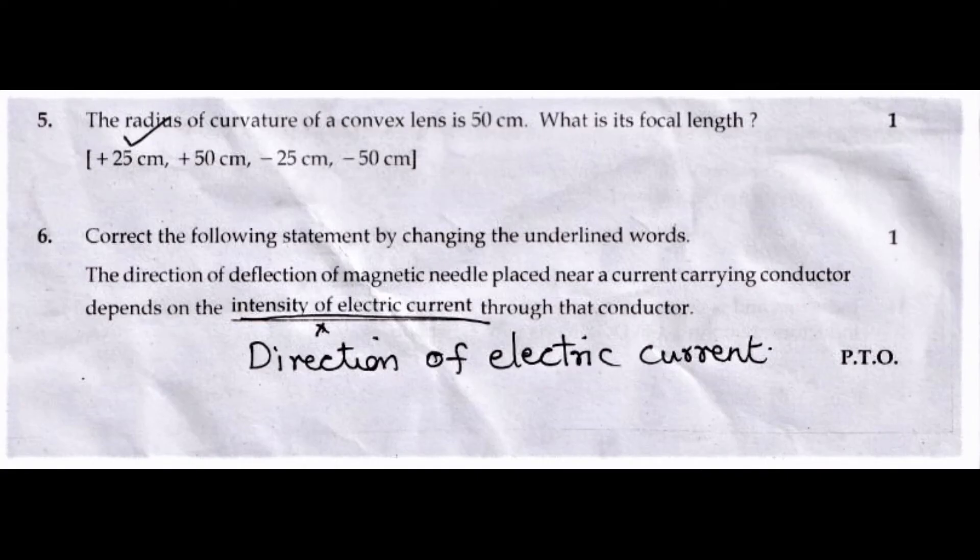Sixth question: Correct the following statement by changing the underlined words - 'The direction of deflection of magnetic needle placed near a current-carrying conductor depends on the intensity of electric current through that conductor.' Answer: Replace 'intensity' with 'direction of the electric current.'